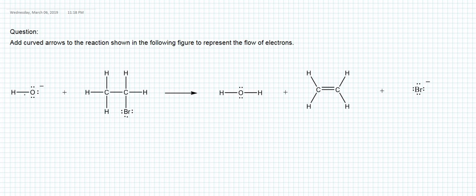If we compare the reactants and products one by one, we can easily understand what kinds of bonds are broken and what kinds form. OH minus is becoming H2O water, so a new covalent bond has to be formed between hydroxide and a hydrogen. Looking at the second reactant, bromoethane is becoming ethene, so ethylene is losing one hydrogen and the bromine fragment.